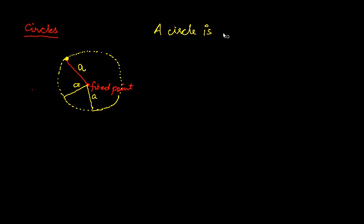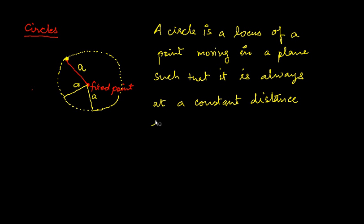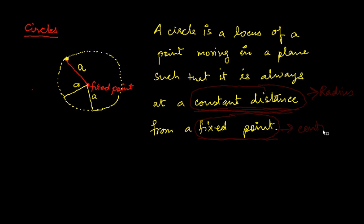A circle is a locus of a point moving in a plane such that it is always at a constant distance from a fixed point. These are two important parameters for the circle. This constant distance is called the radius of the circle, and this fixed point is called the center of the circle.